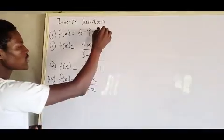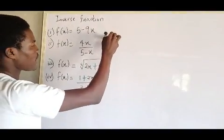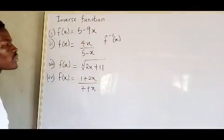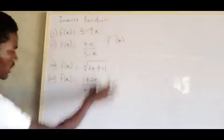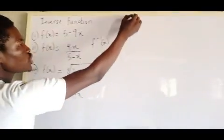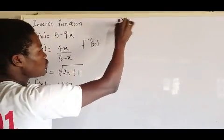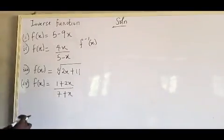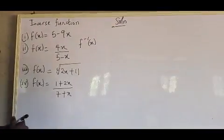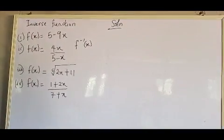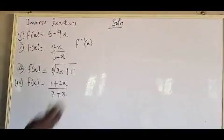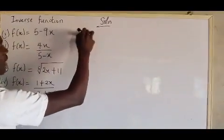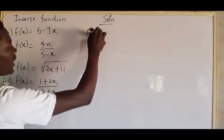Inverse function is always represented like this — F inverse of X. To find the inverse function of X, we can work through all of these questions. For the solution to these questions: the first thing you have to do — if you look at our first example — you see that we have F of X.